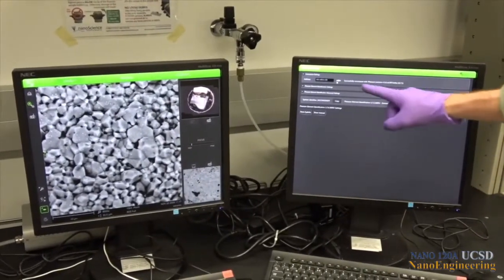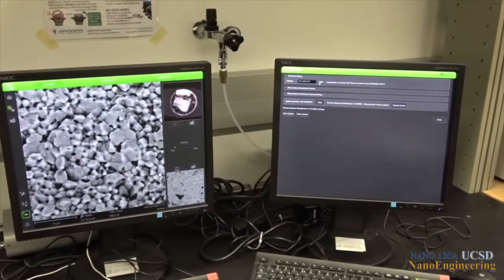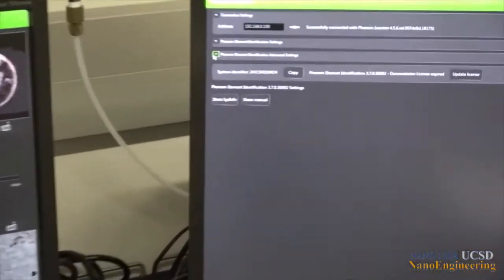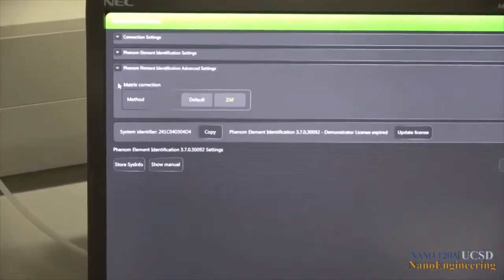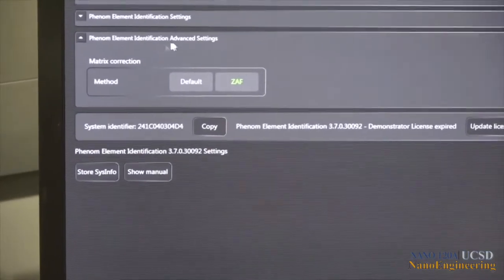In addition, make sure that the ZAF icon is lit in the Phenom Elemental Identification Settings menu. This is a correction routine that's applied to assist in accurate quantitative elemental analysis.